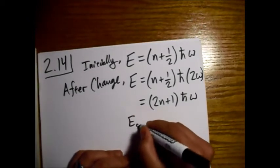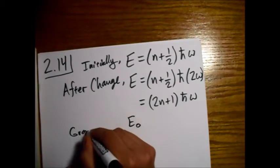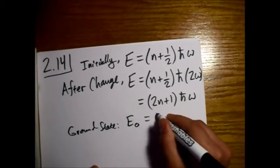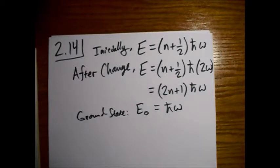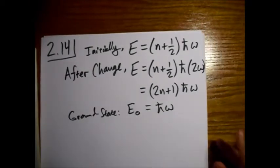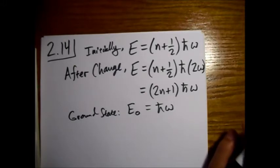So E0 ground state is equal to h-bar omega. You can't go below the ground state. So we don't have any chance of getting the h-bar omega over 2 anymore. So the probability that a measurement of the energy would still return the value of h-bar omega over 2 is zero.